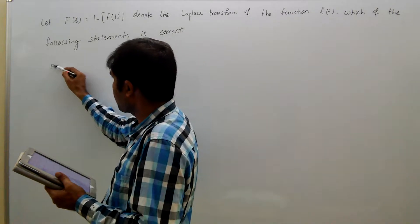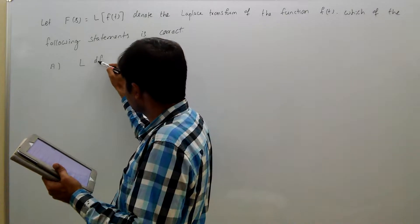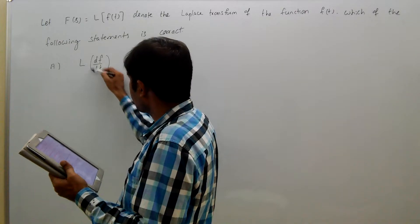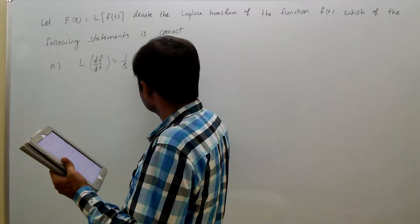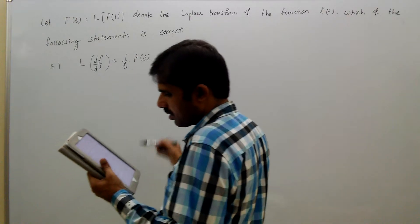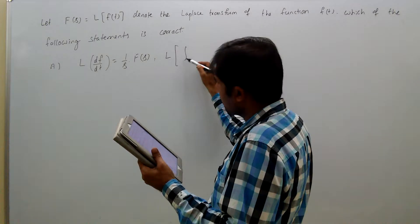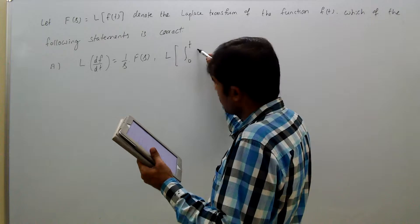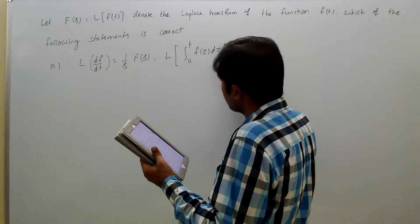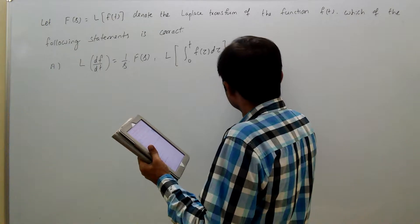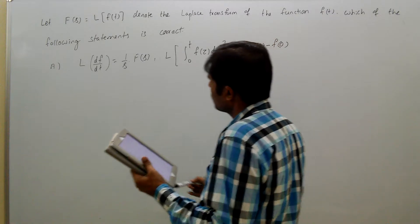Option A: Laplace transform of dF/dt equals (1/S) times F of S. Laplace transform of the integral from 0 to t of F(tau) d-tau equals S times F of S minus F of 0.